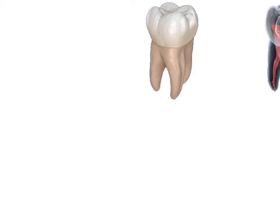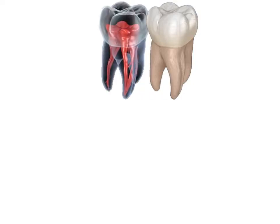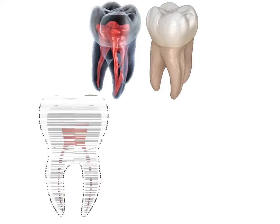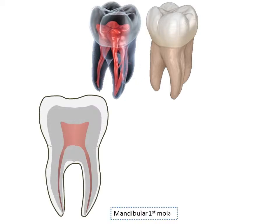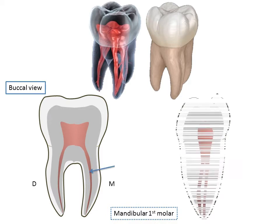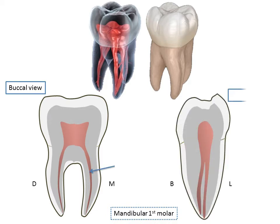The tooth is a three-dimensional structure, but a radiographic image is two-dimensional, so one dimension is inevitably lost. For example, a mandibular first molar is a multi-rooted tooth. In a 2D image from the buccal side, we can only see the distal and mesial roots with a single root canal each. Viewing from the mesial side reveals two roots — one buccal and one lingual — in the mesial root, which were not visible in the buccal view.